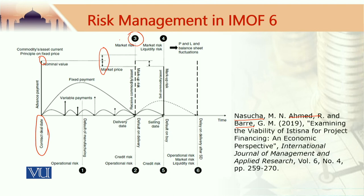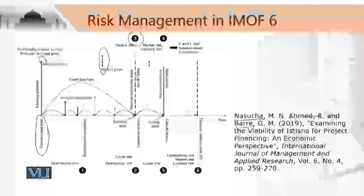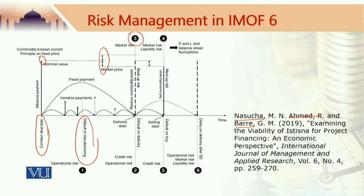During the period of construction, there is always a possibility of delay — we call it default of manufacturing. The contractor that was hired might not be able to deliver the manufacturing at different stages as per the contract, and of course this would give rise to a risk. If this is because of a mistake or oversight, it could be an example of operational risk. So operational risk is present here as well.